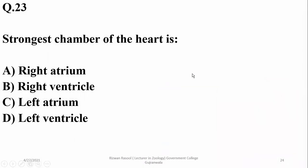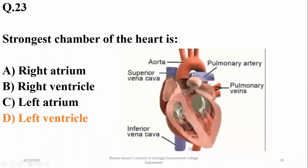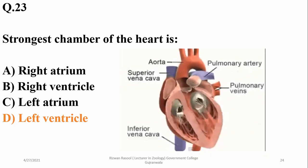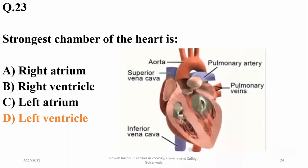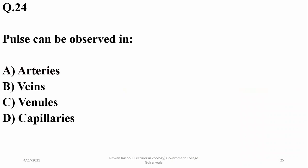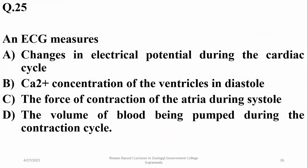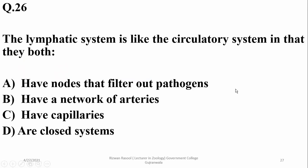The strongest chamber of the heart is the left ventricle, which pumps blood towards body tissues. Pulse can be observed in arteries. An ECG measures changes in electrical potential during the cardiac cycle, shown in the form of a graph — an electrocardiogram.